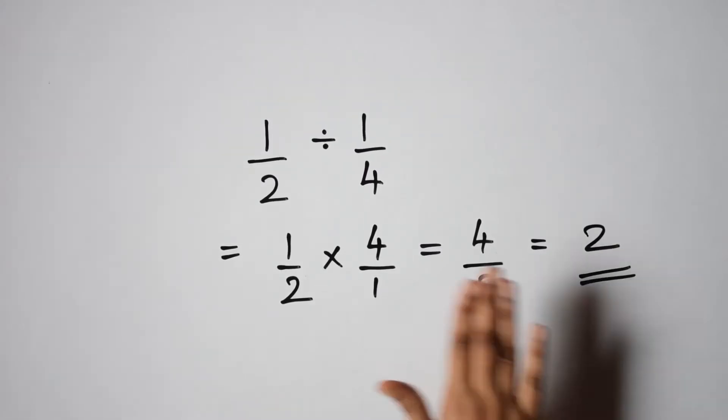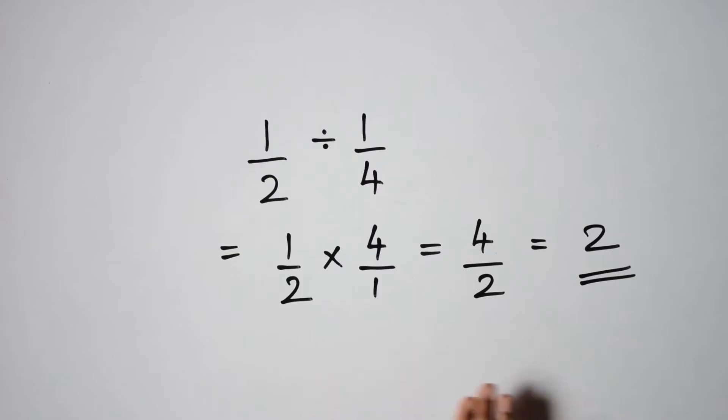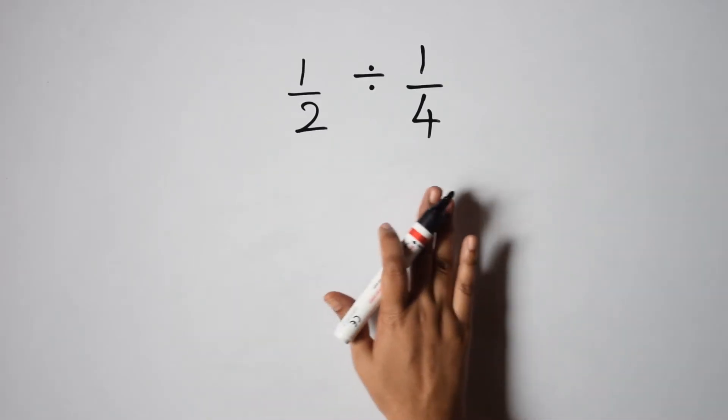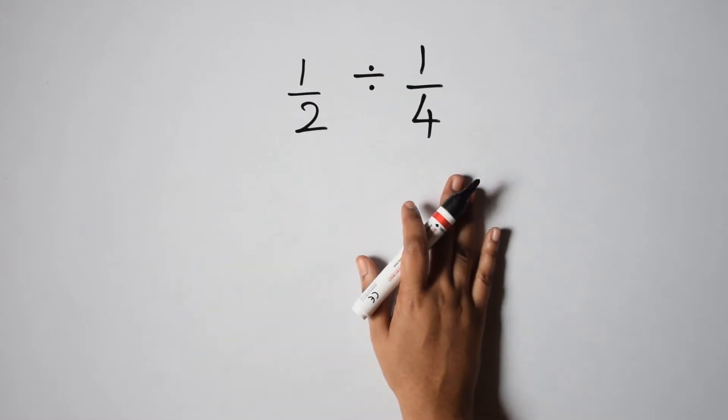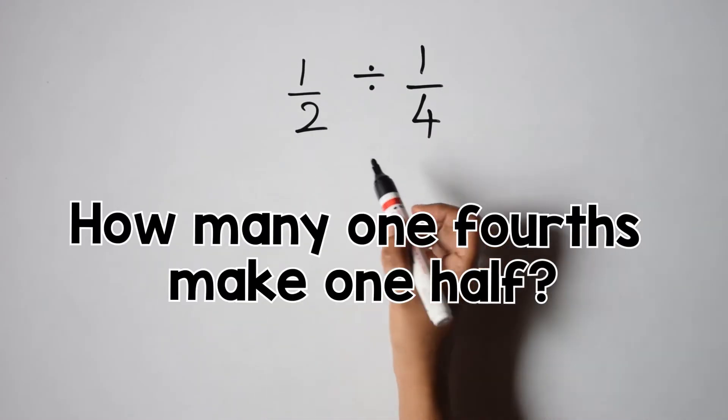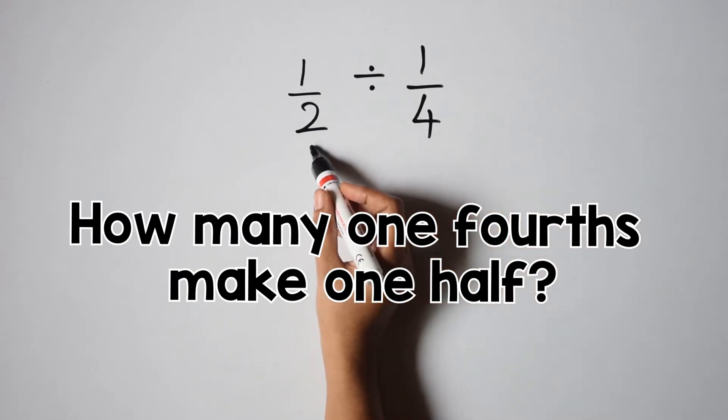But how is this 2 related to the question? What is the concept behind this? Let us find out using paper strips. The problem here is 1 by 2 divided by 1 by 4. How do we read this? We read this as how many one fourths make one half?